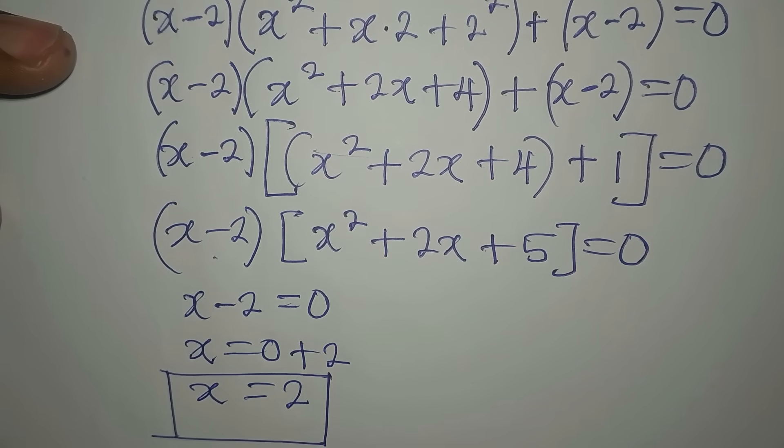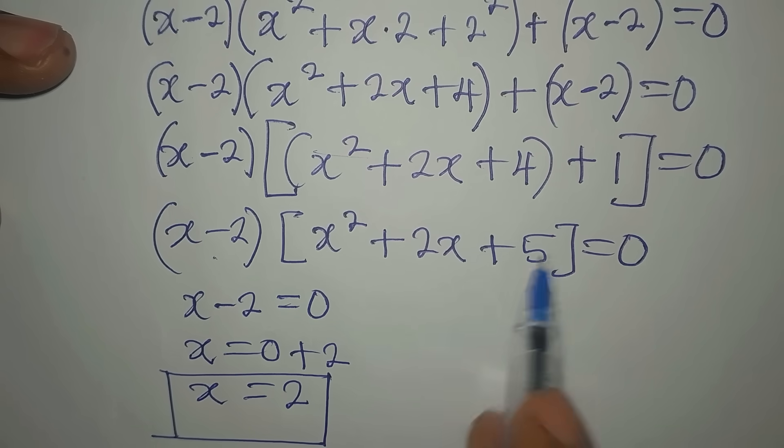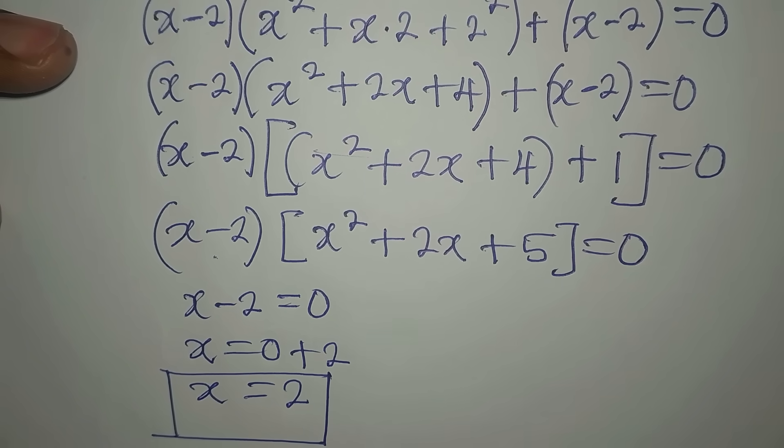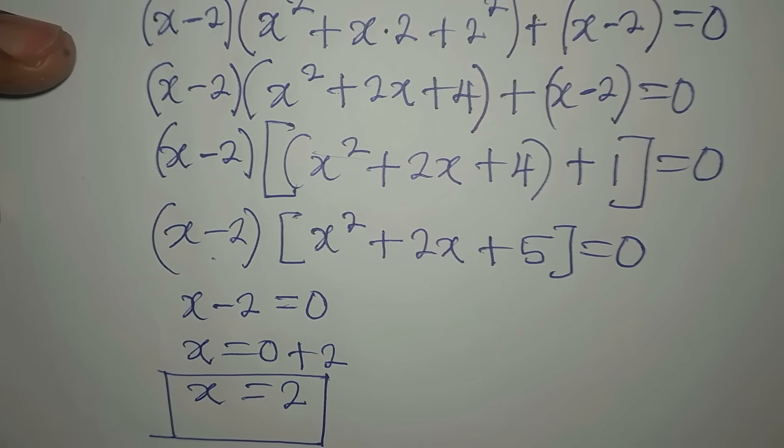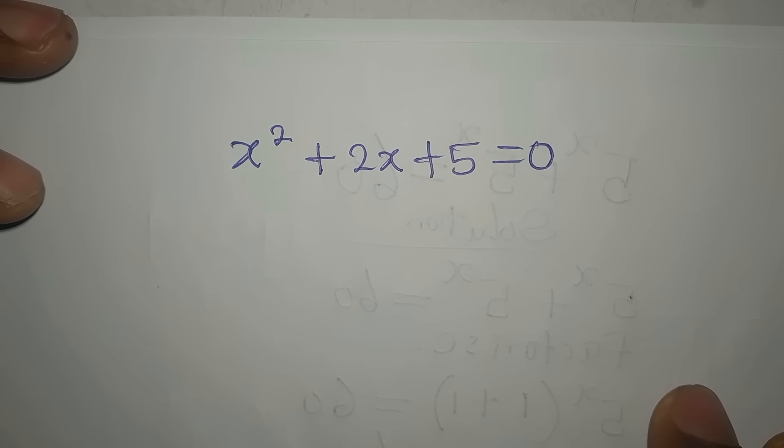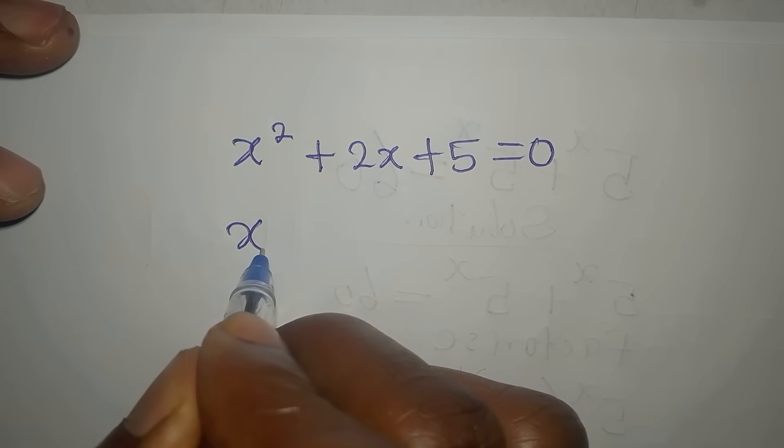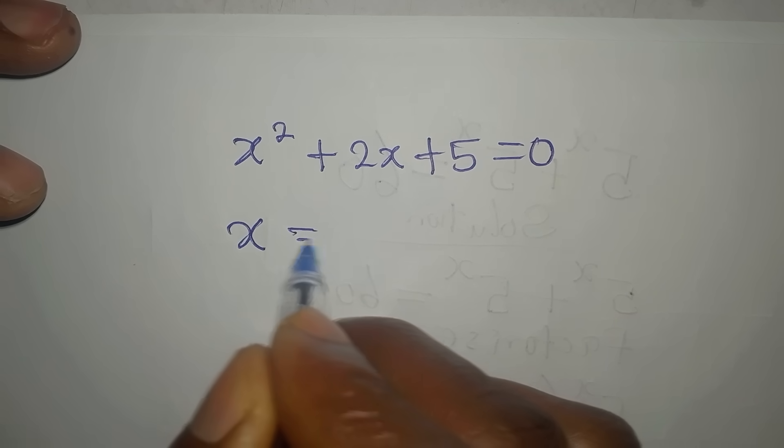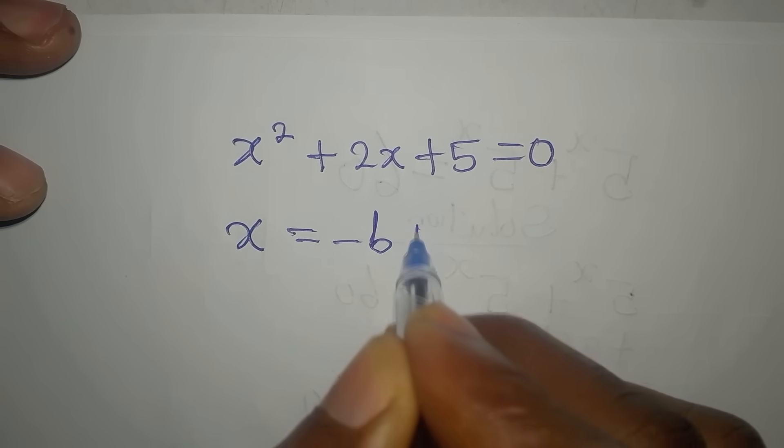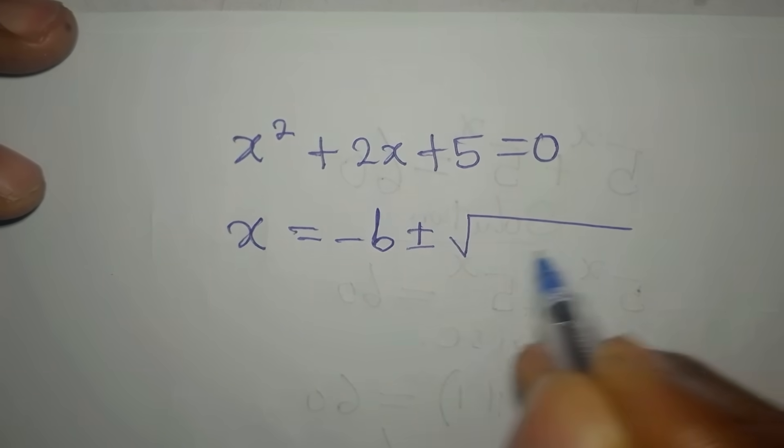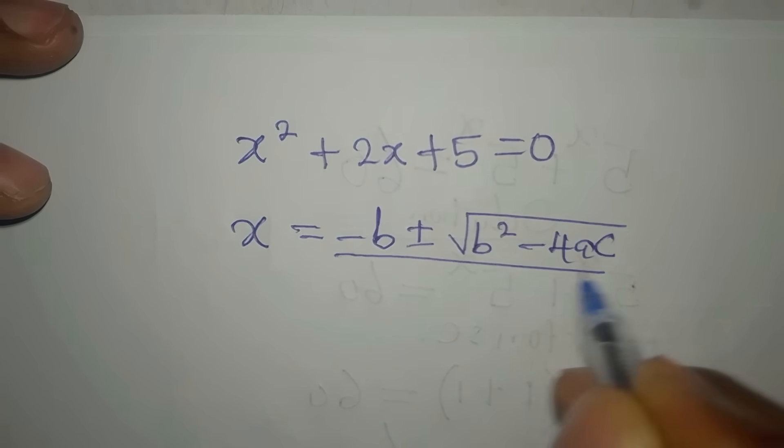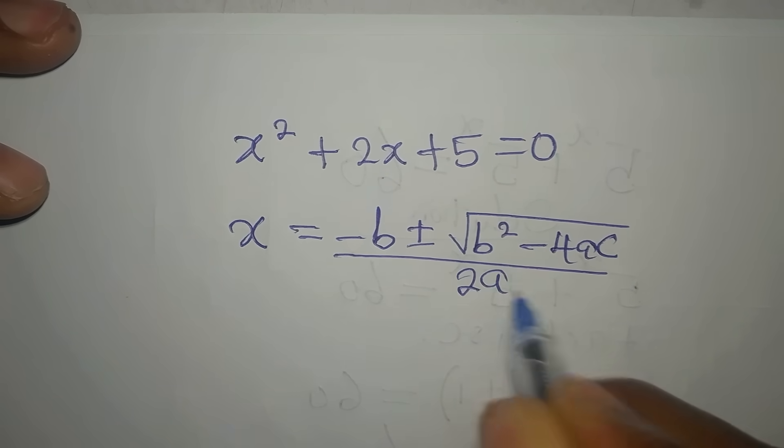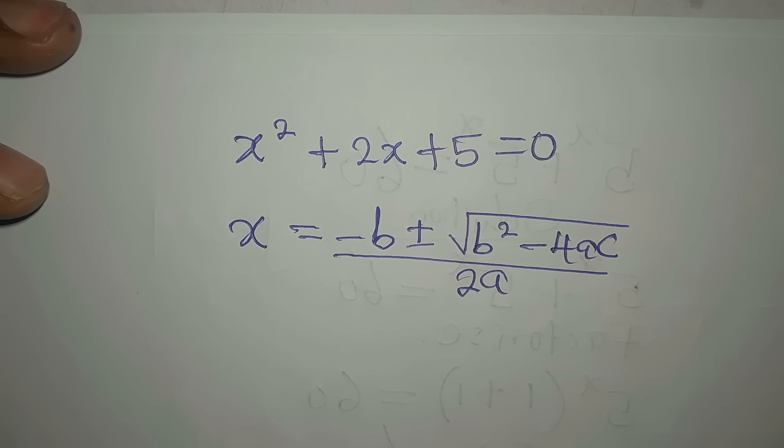And again, we'll now let this to be equal to 0. x squared plus 2x plus 5 to be equal to 0, and we'll get two more solutions from there. So from here now, let's use the formula method for this. x is equal to minus b plus or minus the square root of b squared minus 4ac all over 2 times a.